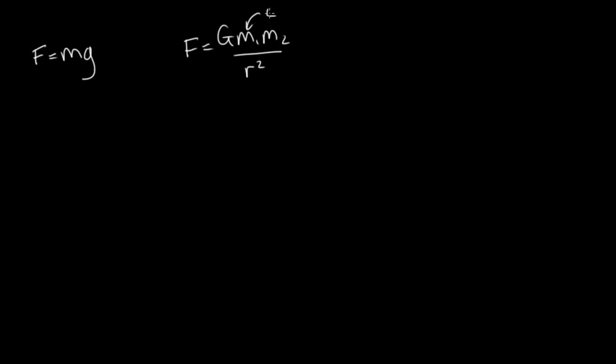So when we're dropping an object on the surface of the Earth, this mass 1 is the Earth, and this mass 2 is the object. So what we can do now is equate these two forces. They're both describing the same thing, the force felt by an object when it's dropped on the surface of the Earth.